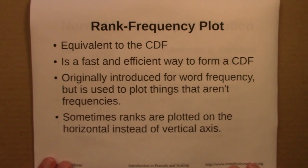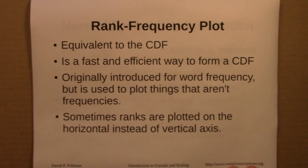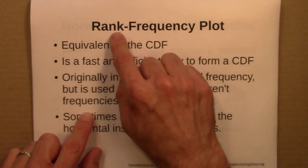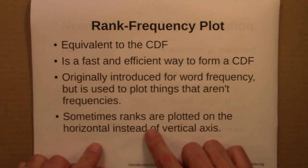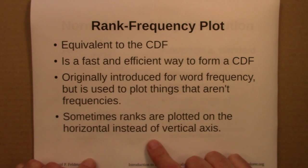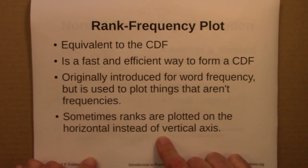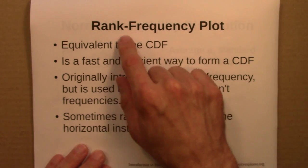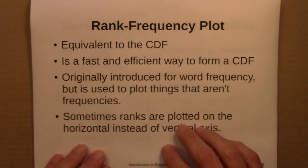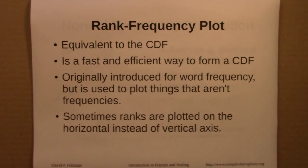Rank-frequency plots are a fast and efficient way to form a CDF. They were originally introduced for word frequency, but are used to plot all sorts of things that aren't frequencies — yet are still sometimes called rank-frequency plots, which can be confusing. Also confusing is that sometimes the axes are reversed, with ranks on the horizontal axis, which leads to a slope that's the inverse of what you'd get with the convention used in this course.